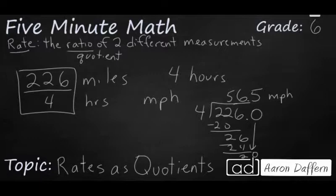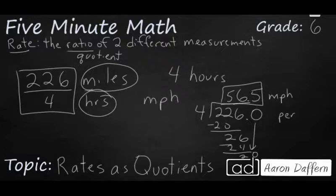So that is the rate. That is the speed because I'm taking two different measurements. I'm taking my miles, I'm taking my hours and I'm combining them into one number, 56.5. And typically whenever you're seeing this word per, that is a big clue that you're dealing with a rate, that you're looking at a ratio of two different measurements.